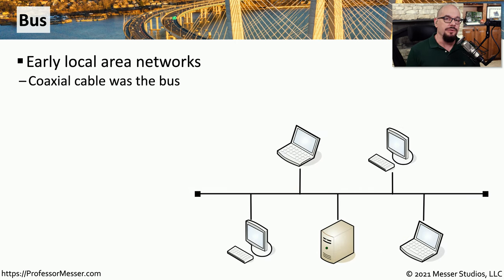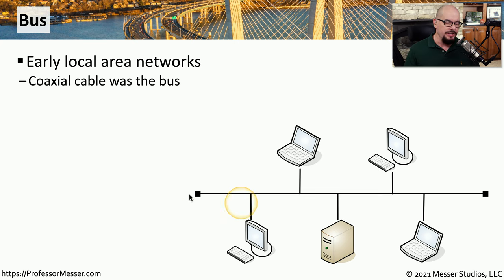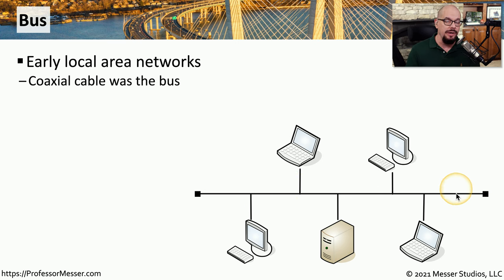Early types of ethernet networks were not switched ethernet, but were instead run over coax. And this coax was quite simply a cable that was run down the middle of the room, very similar to this cable. This is a bus network. And although it was commonly used on those early ethernet networks, we can still find modern networks that use the same bus topology.